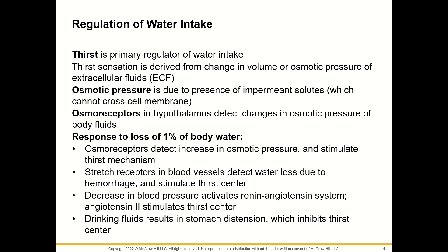Thirst is the primary regulator of water intake. Thirst sensation is derived from a change in volume or osmotic pressure of the extracellular fluid (ECF). Osmoreceptors in the hypothalamus detect changes in osmotic pressure of body fluids. In response to loss of 1% of body water, the osmoreceptors detect an increase in osmotic pressure and stimulate the thirst mechanism. Stretch receptors in blood vessels detect water loss due to hemorrhage and stimulate the thirst center. A decrease in blood pressure activates the renin-angiotensin system, and angiotensin 2 stimulates the thirst center. Drinking fluids results in stomach distension, which inhibits the thirst center.